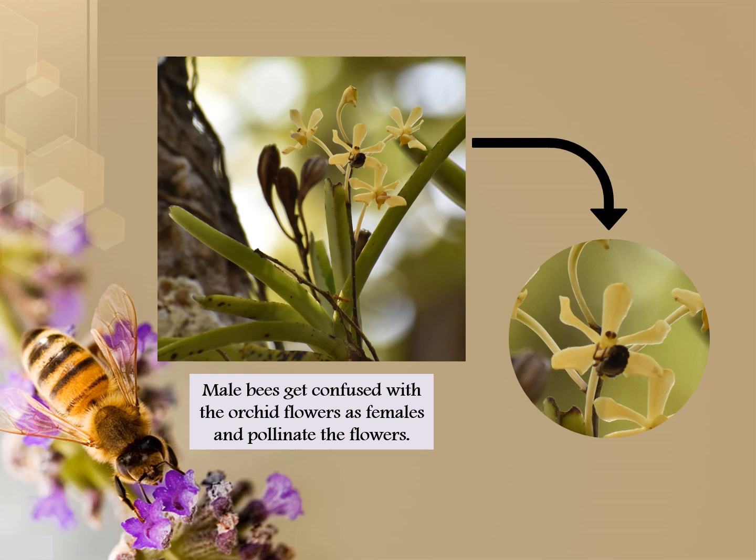Male bees get confused with orchid flowers, mistaking them for females, and in doing so pollinate the flowers.